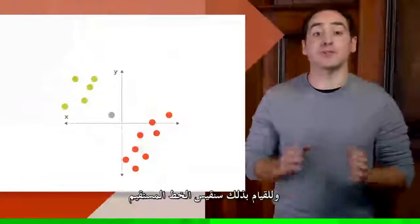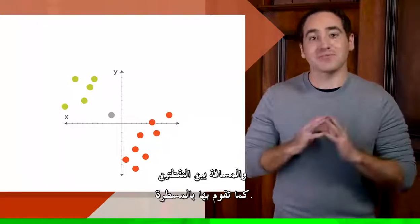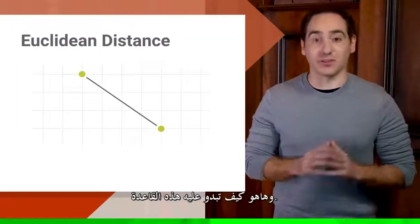And to do that, we'll measure the straight line distance between two points, just like you do with a ruler. There's a formula for that called the Euclidean distance. And here's what the formula looks like.